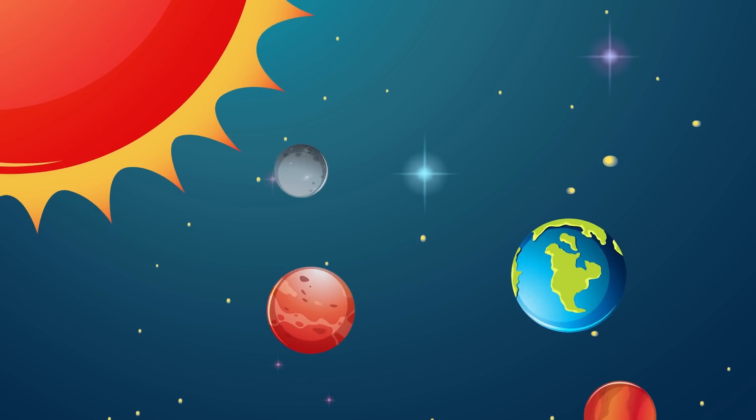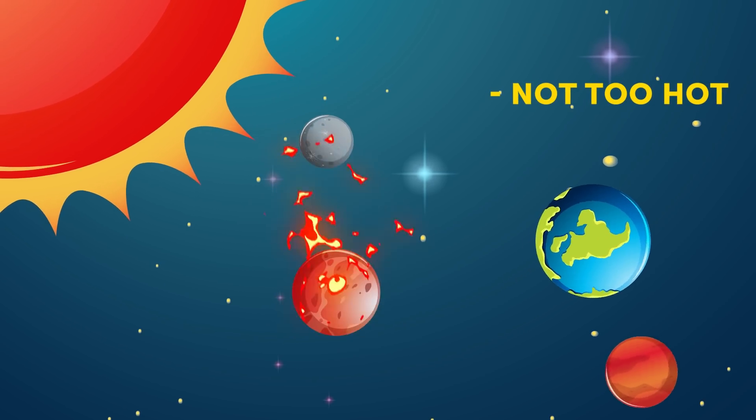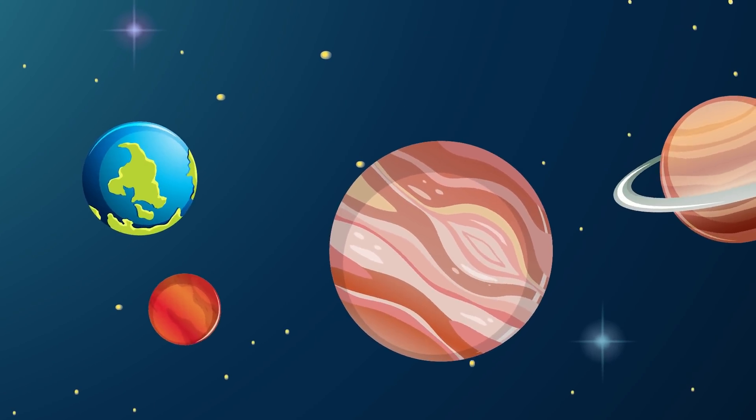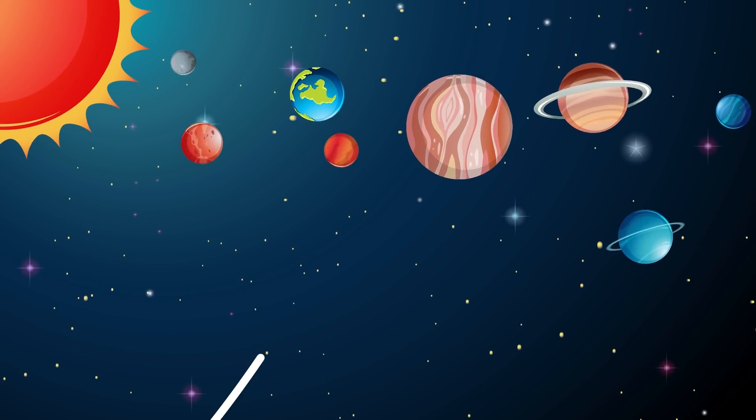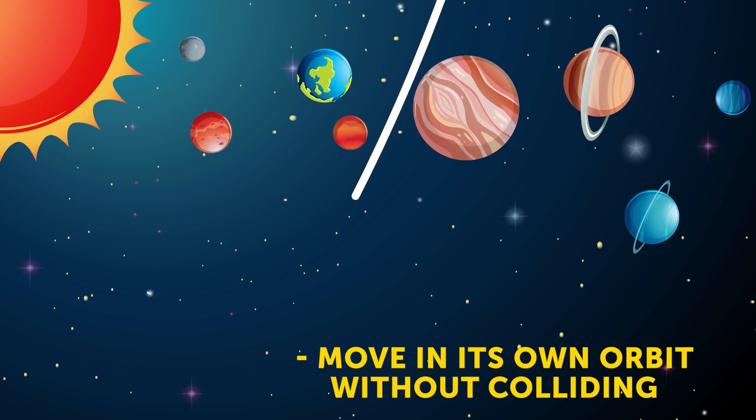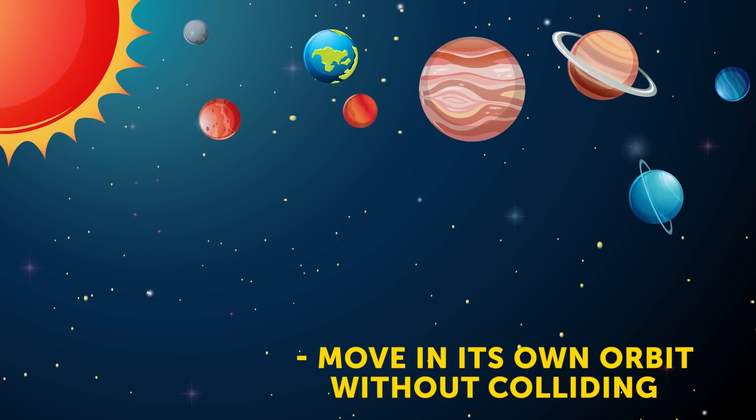The orbits of Venus and Mercury may be too hot for any life to occur there, while conditions on more distant Mars are already much colder than on our planet. In addition, Earth 2.0 should be able to move in its own orbit without colliding with nearby planets.